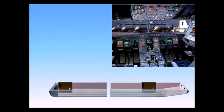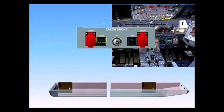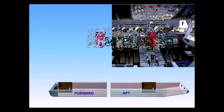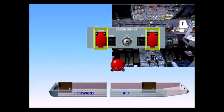The cargo smoke panel on the overhead panel has red smoke indicator lights. There are two guarded discharge switches and one fire bottle. Each switch controls one squib or discharge head of the bottle. When pushed, the fire bottle is emptied into the respective compartment. The extinguishing agent is discharged via one nozzle into the forward compartment or two nozzles into the aft compartment.